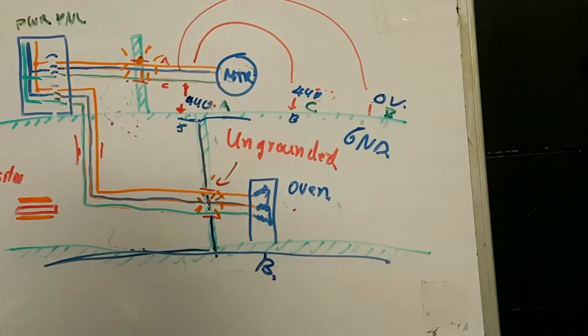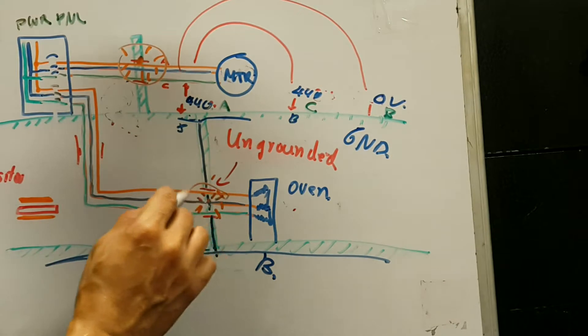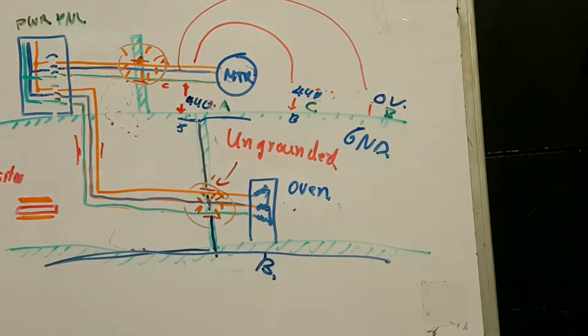That's why, whenever we get grounds on board the distribution system, we got to clear them as fast as we can, before another ground shows up, to prevent these massive class C fires and equipment getting damaged.